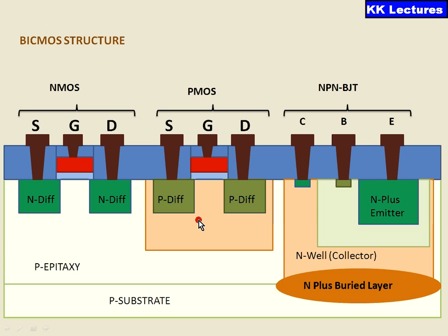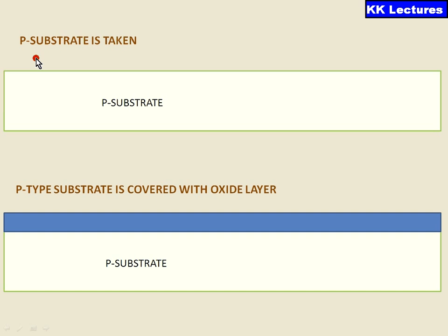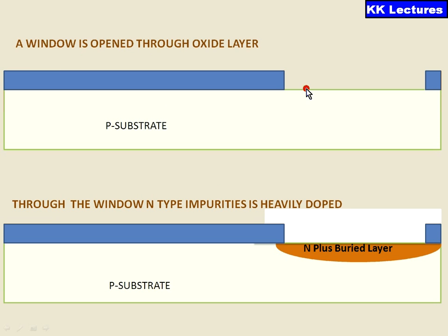As we know the NMOS fabrication process, it is very easy for us to understand about the BiCMOS fabrication process. Let us go into the step by step process. We require a silicon substrate into which we add p-type impurities to form a p-type substrate, and on the p-type substrate we cover it with an oxide to protect the surface from further oxidation. A window is opened through the oxide layer using UV rays, and in that window N-type impurities are heavily doped to form an N-plus buried layer in the p-type substrate.